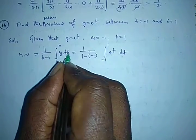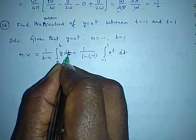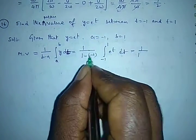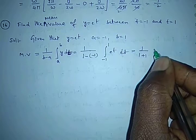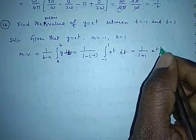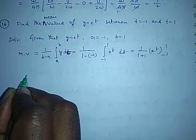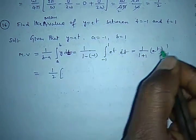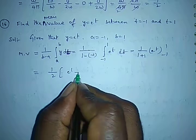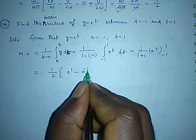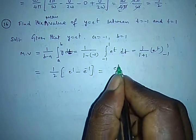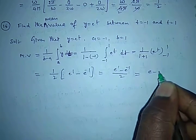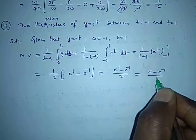Here our variable is t, so I write t in the formula. This equals (1 / 2) × [e^t] evaluated from -1 to 1, which equals (1/2) × (e^1 - e^(-1)), giving us the result: (e - e^(-1)) / 2.